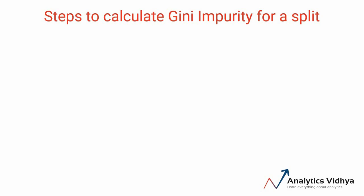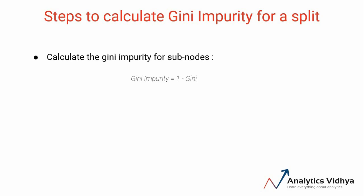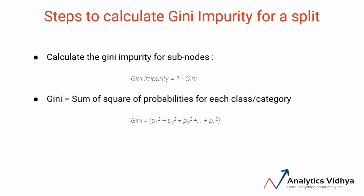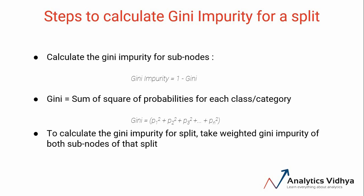Let's look at the steps to calculate Gini impurity of a split. First, we calculate the Gini impurity for sub-nodes. Gini impurity is 1 minus Gini, where Gini is the sum of squares of success probabilities of each class, given as p1² + p2² + ... + pn², considering there are n classes. Once we've calculated the Gini impurity for sub-nodes, we calculate the Gini impurity of the split using a weighted impurity of both sub-nodes, where the weight is decided by the number of observations or samples in both nodes.